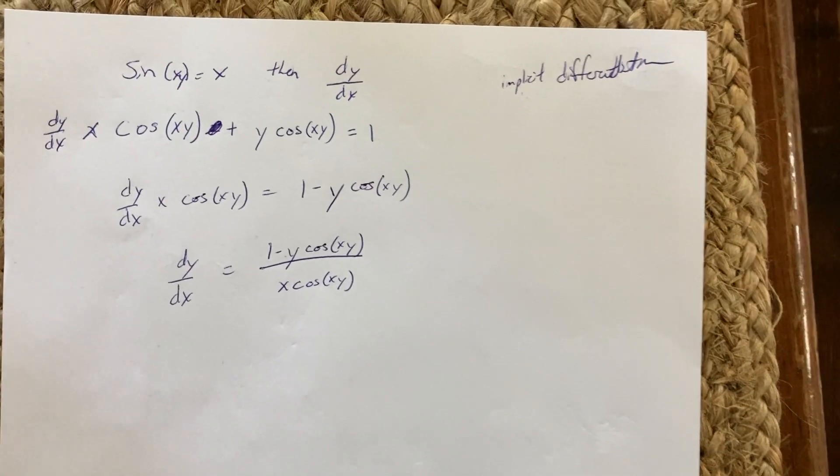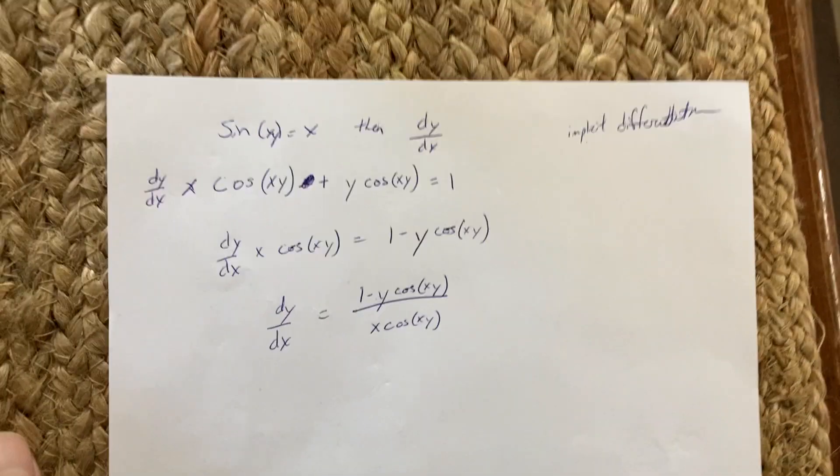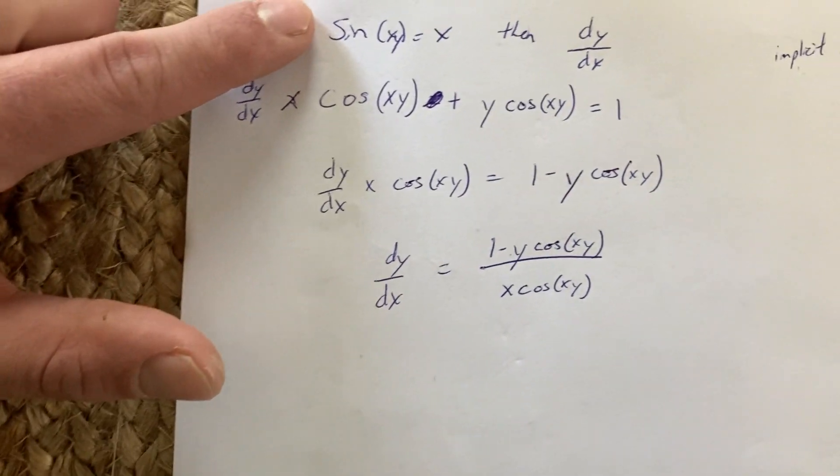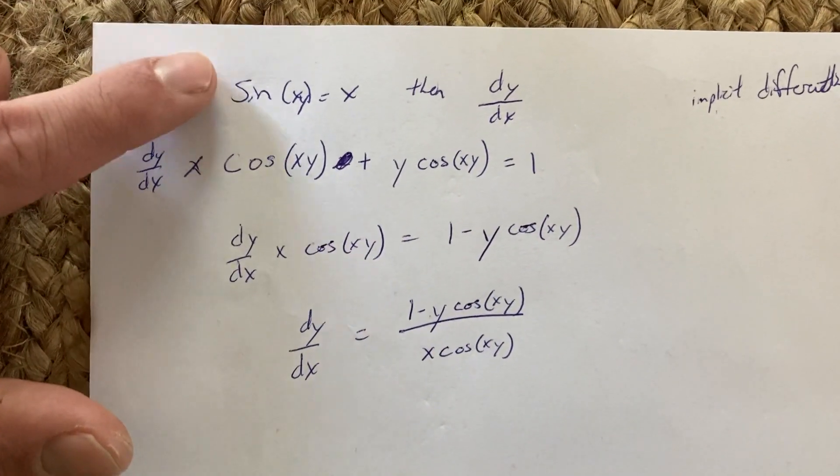So here is the implicit differentiation. We're taking—our goal is to find dy/dx of this guy.